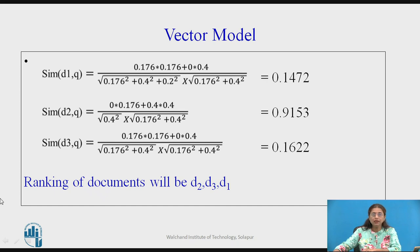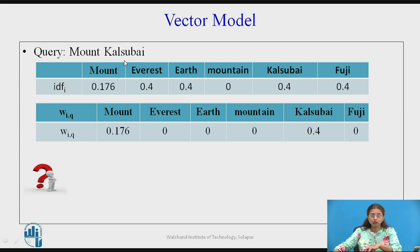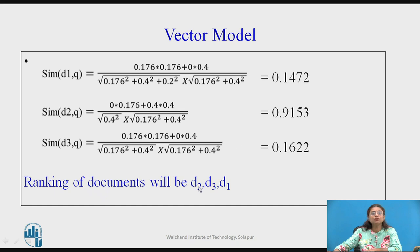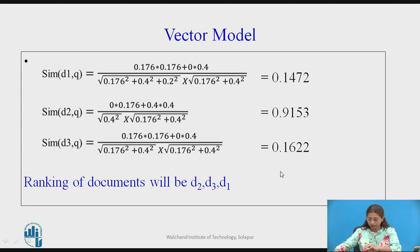Using the cosine similarity formula, the numerator uses the weights of matching terms — weight of 'mount' in the document and query; 'Kalsubai' is not present in the first document so it is 0. The denominator is the square root of the sum of squares of all keyword weights in the document and in the query. After calculation, the degree of similarity is 0.14, 0.91, and 0.16 for D1, D2, and D3 respectively. The most relevant document is D2 with 0.91, so the ranking is D2, D3, then D1.